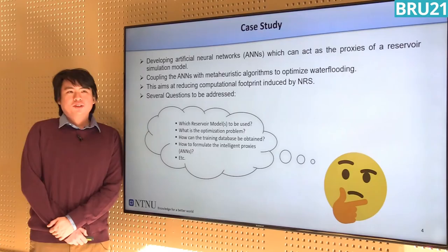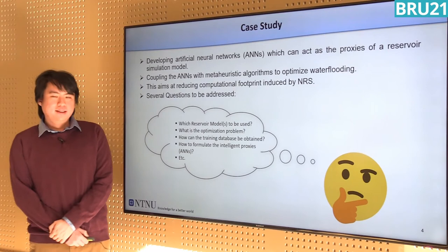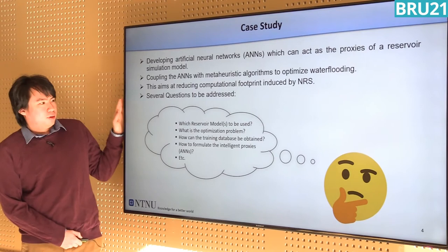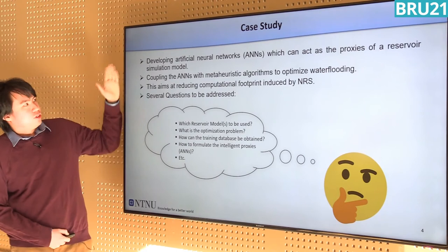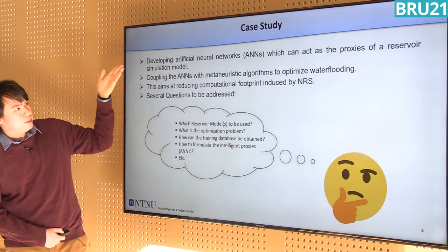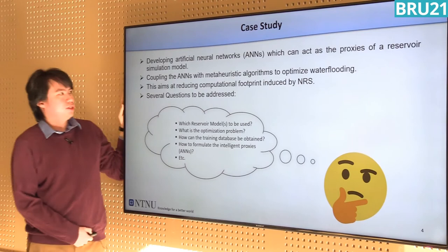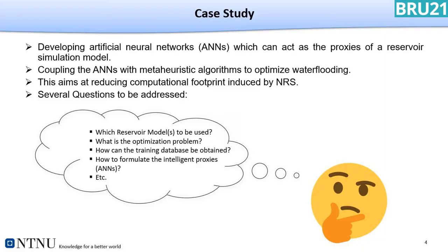Now I would like to present a case study that we have done in this research work. In this case study, it is important to identify several questions before proceeding to design the proxy models. We are trying to develop artificial neural networks that can act as proxies of a reservoir simulation model. The simulation model we are going to use is the well-known ACT model. After building this ANN, we will couple it with a meta-heuristic algorithm to optimize the water flooding process. This whole work aims at reducing the computational footprints induced by NRS.